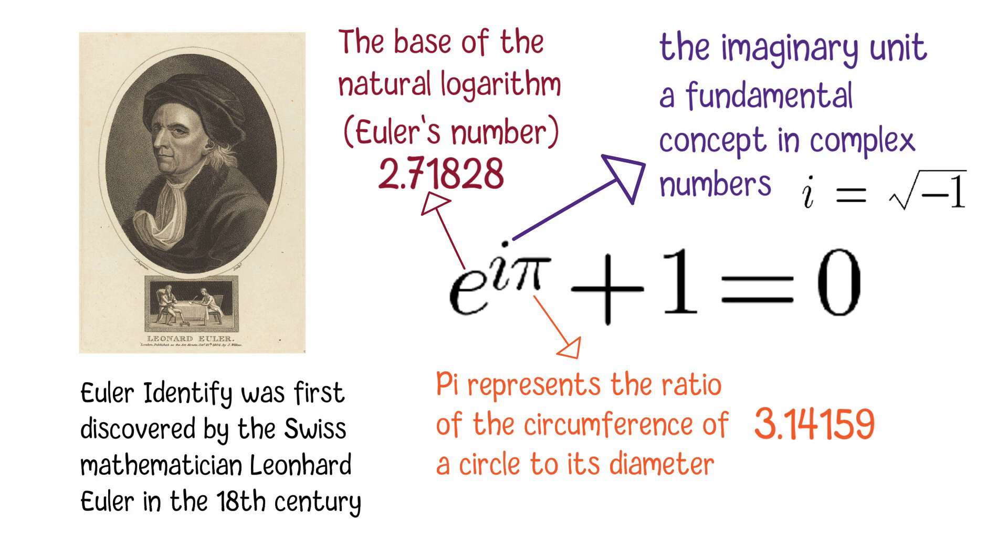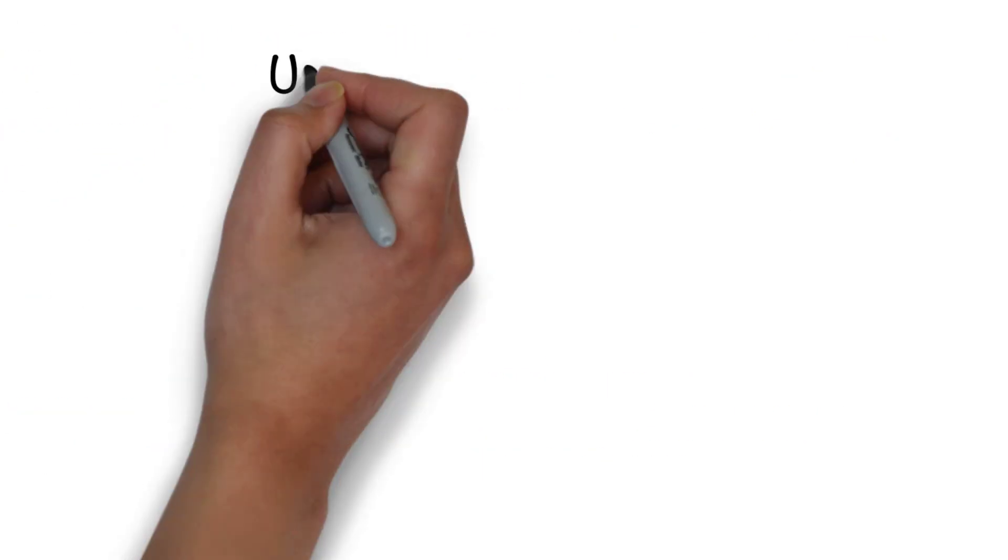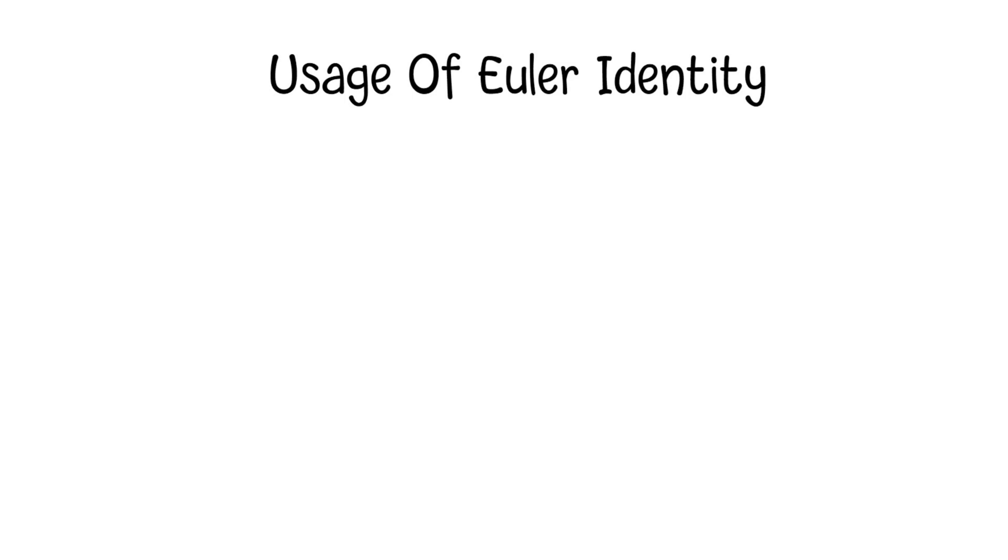Euler's identity has become a symbol of the beauty and elegance of mathematics. Nowadays, the identity has a wide range of practical and theoretical applications in various fields of mathematics, science, and engineering.